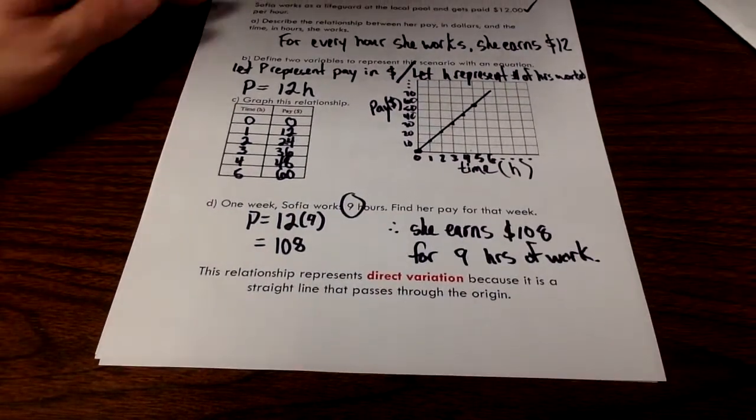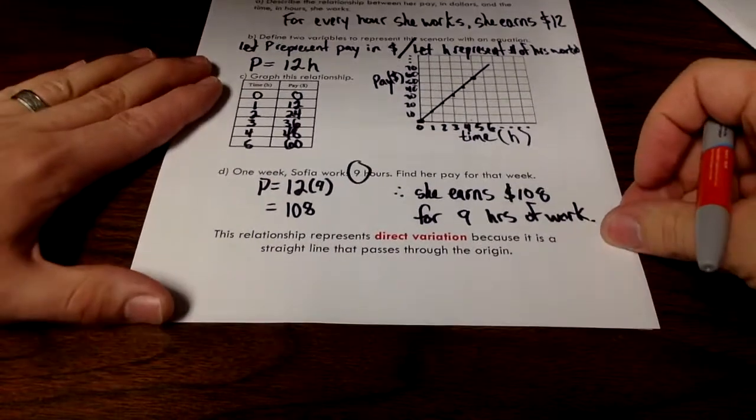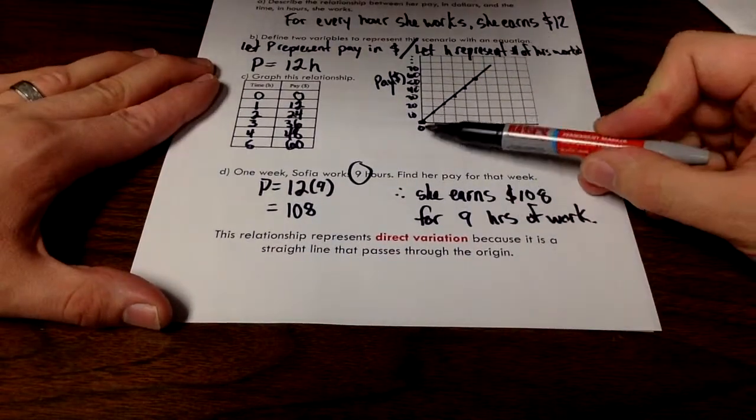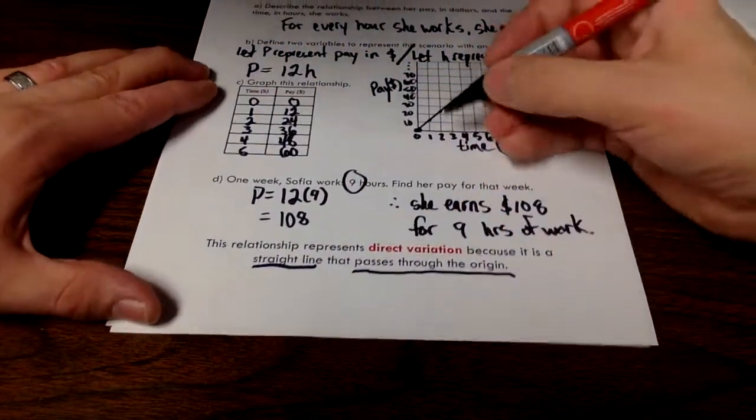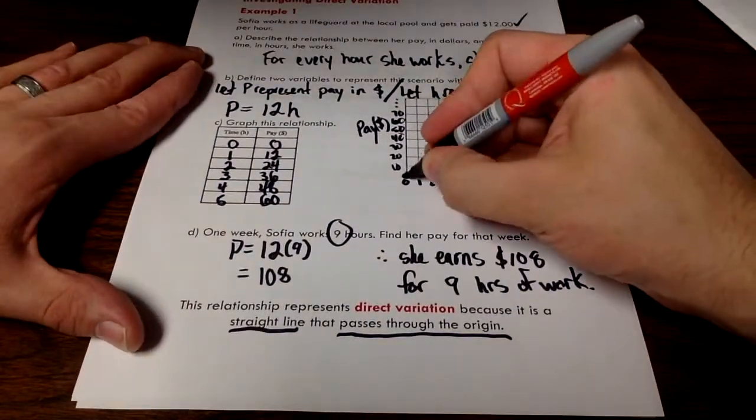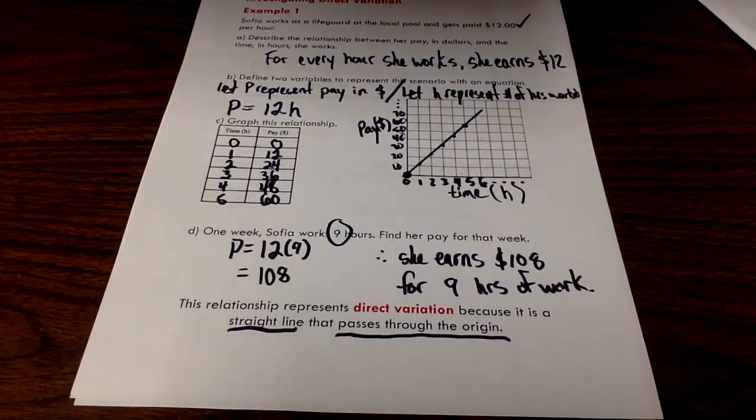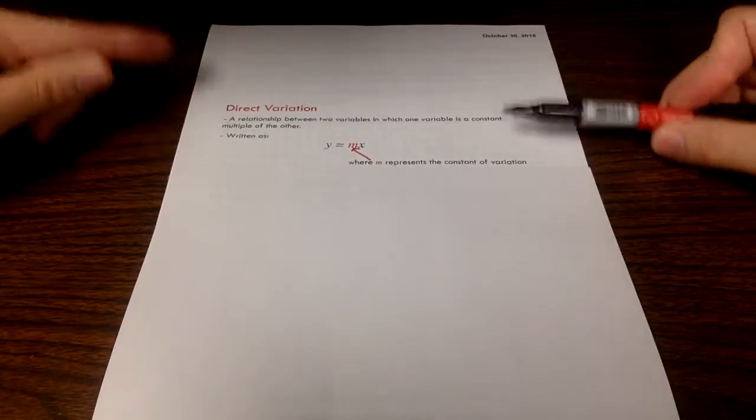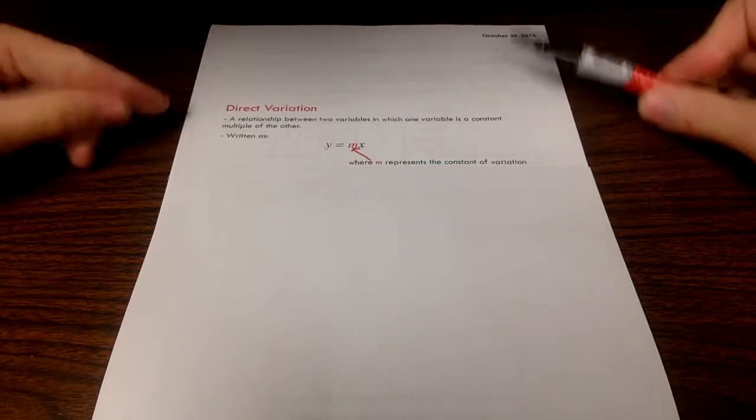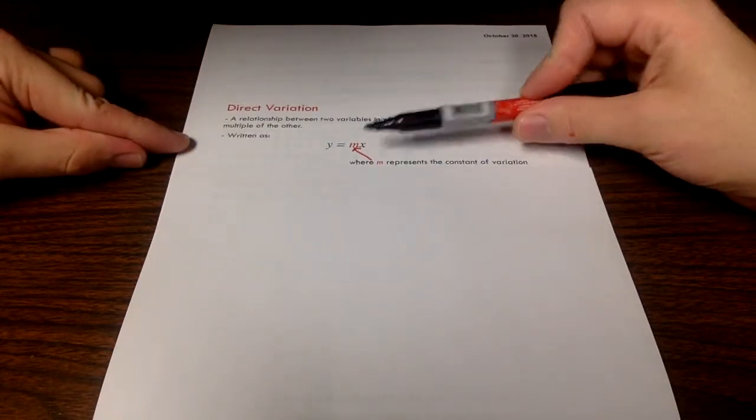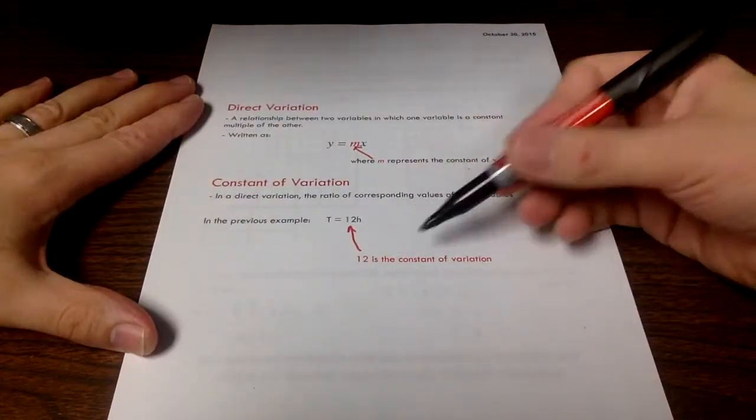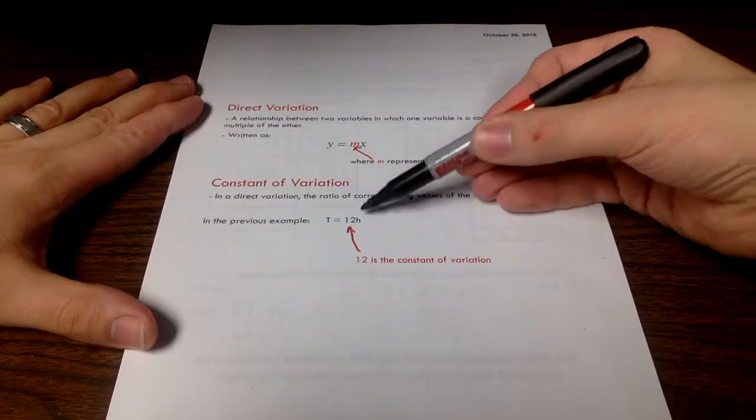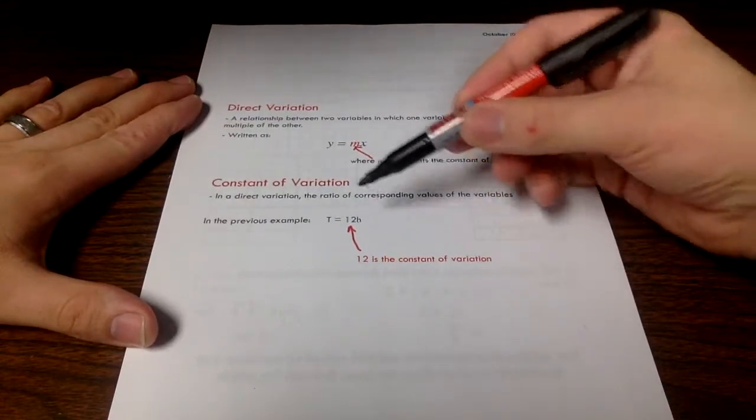That's just a little example of something we call direct variation. To summarize, we call this relationship a direct variation relationship because it's a straight line and it passes through the origin. If you look at our graph, this line does pass through the origin, and as a result, we call it direct variation. This is a relationship where we've got two variables. One is just a constant multiple of the other. You write this as y equals mx. M is just our constant of variation. In our example, we had 12 as the constant of variation. That means for every hour, our pay increases by $12.